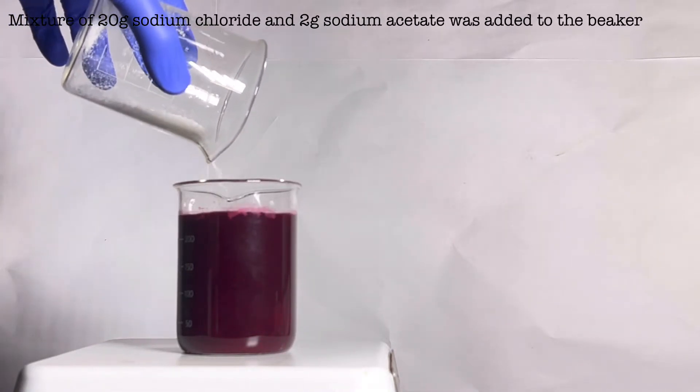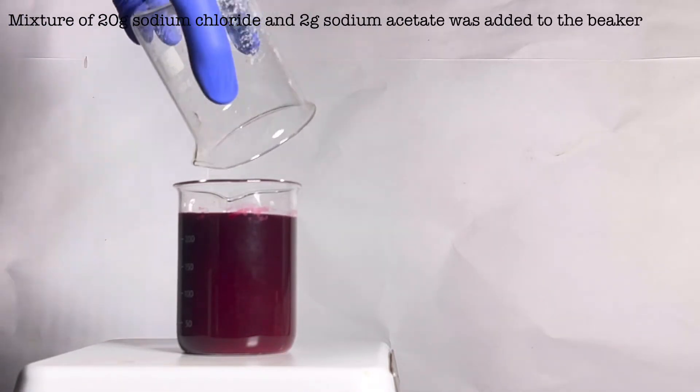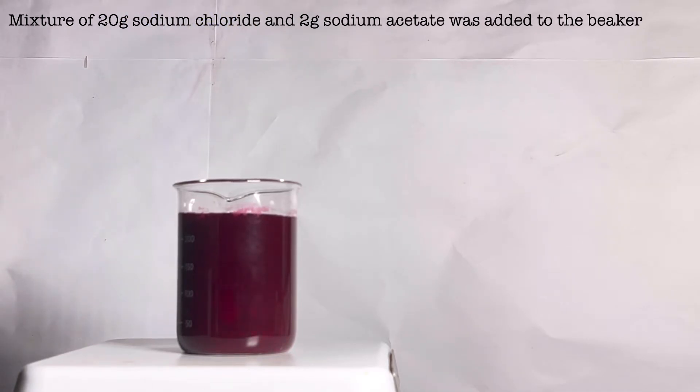A mixture of 20 grams of sodium chloride and 2 grams of sodium acetate was added to the solution. A lot of sodium violurate precipitates out immediately due to the common ion effect.